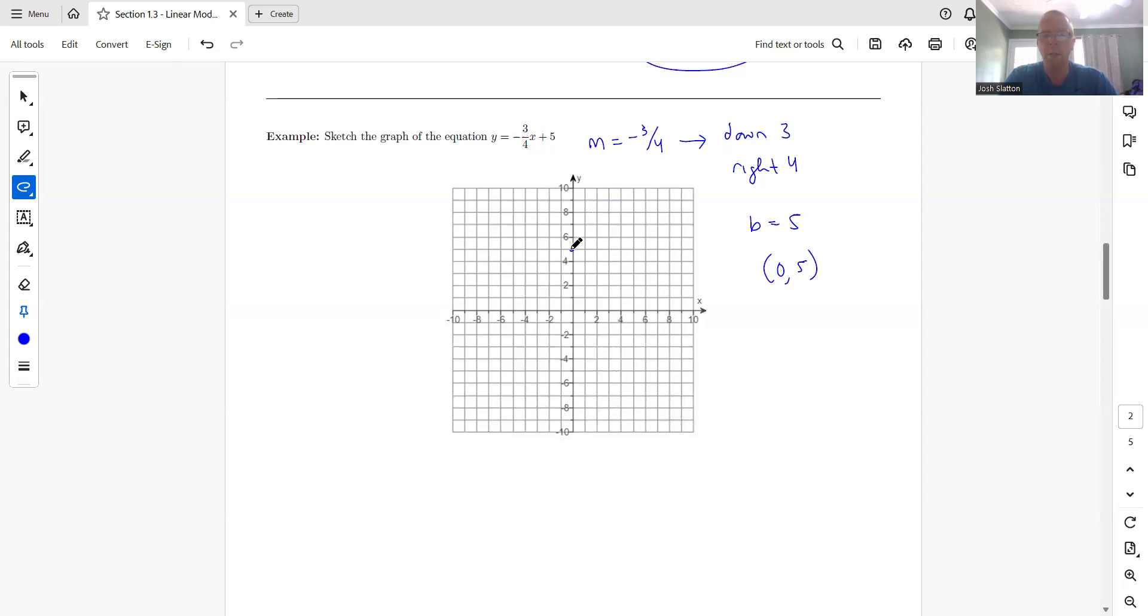Now go down 3. So 1, 2, 3. Go over 4. And that would put us there. And then if you're drawing this by hand, you might want to put a couple more. If you're on the computer, you probably just need to put 2.